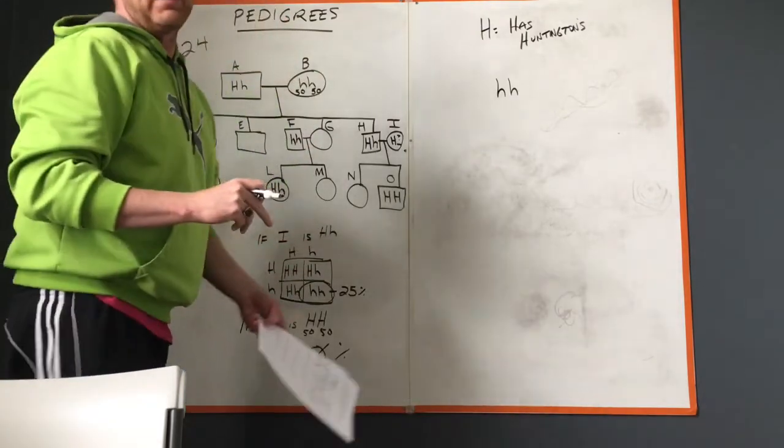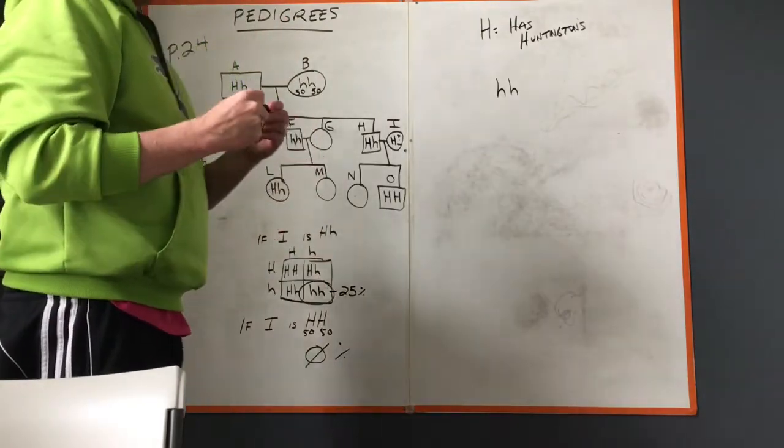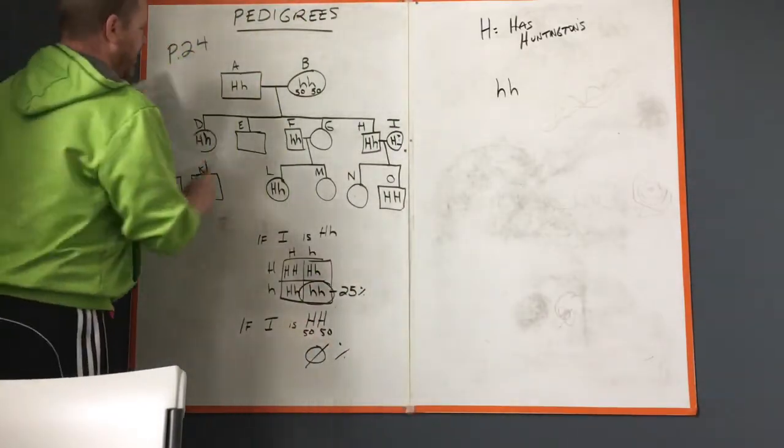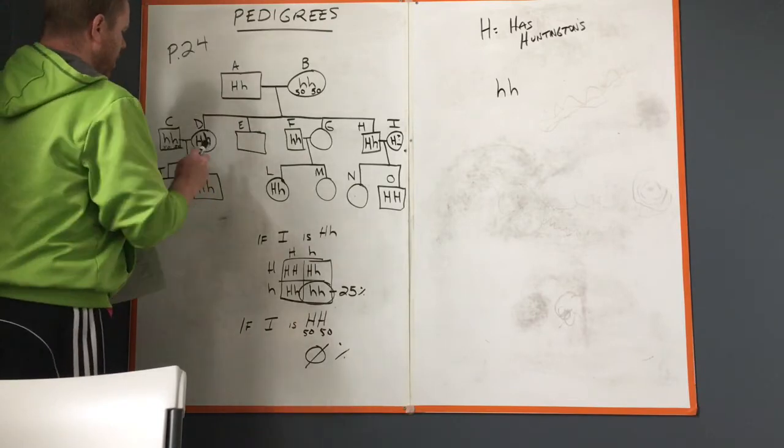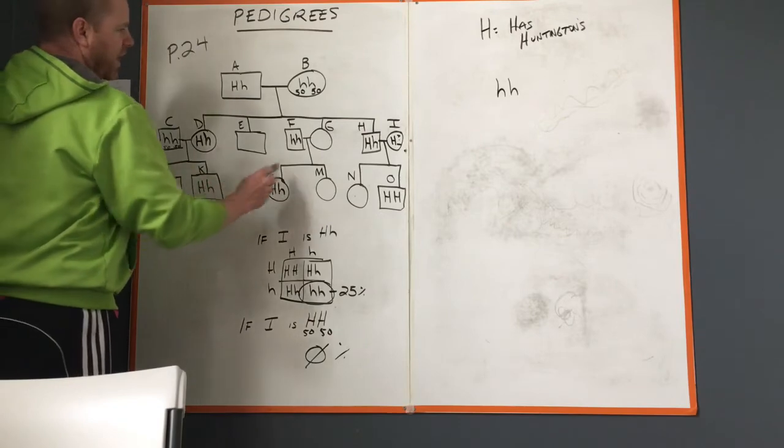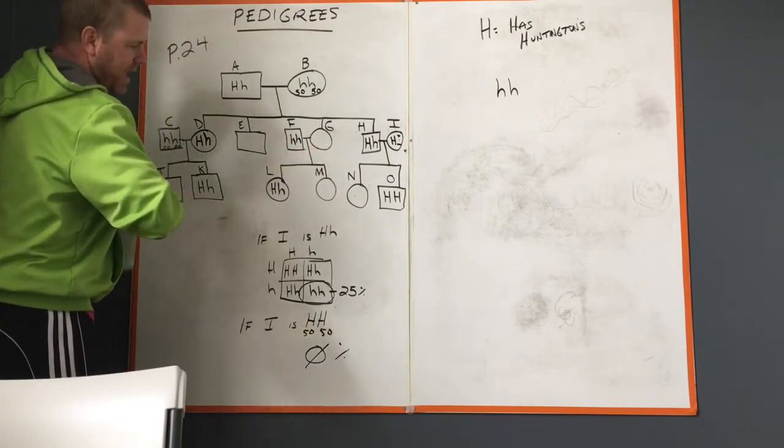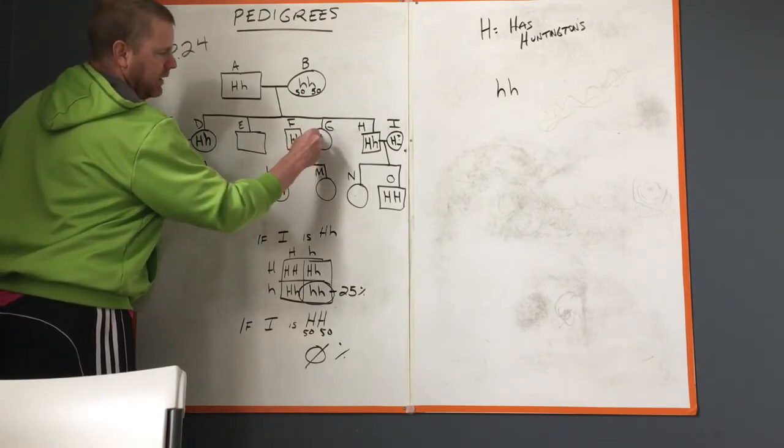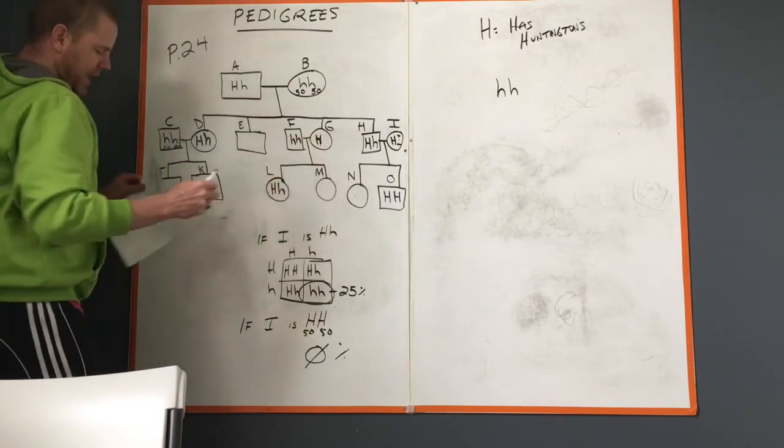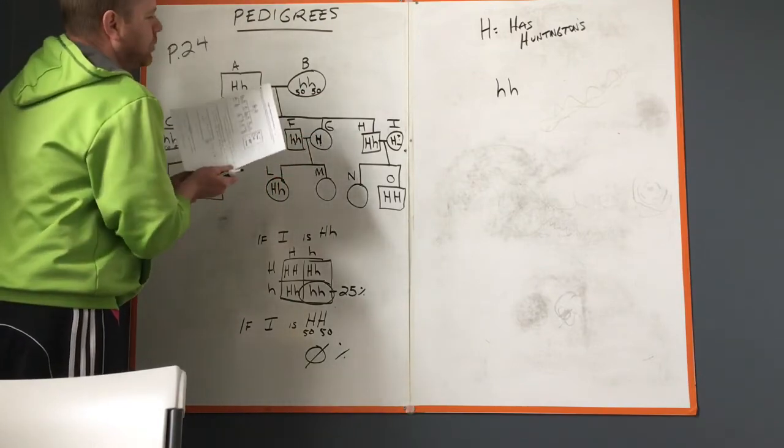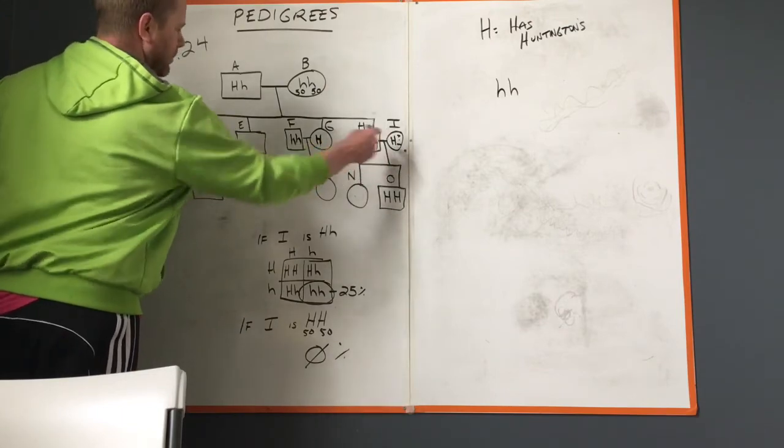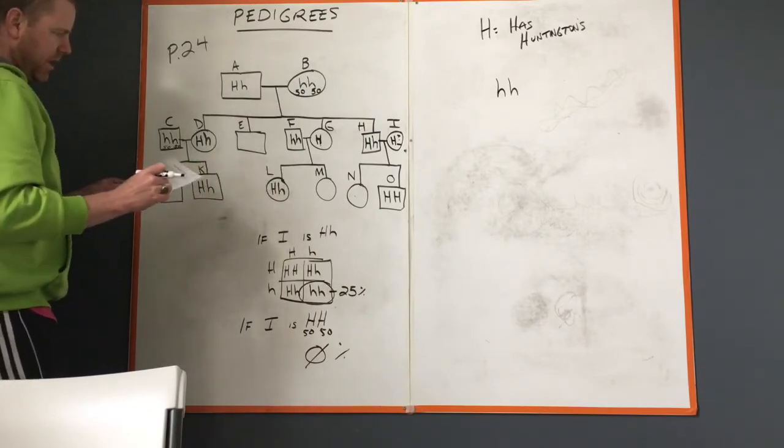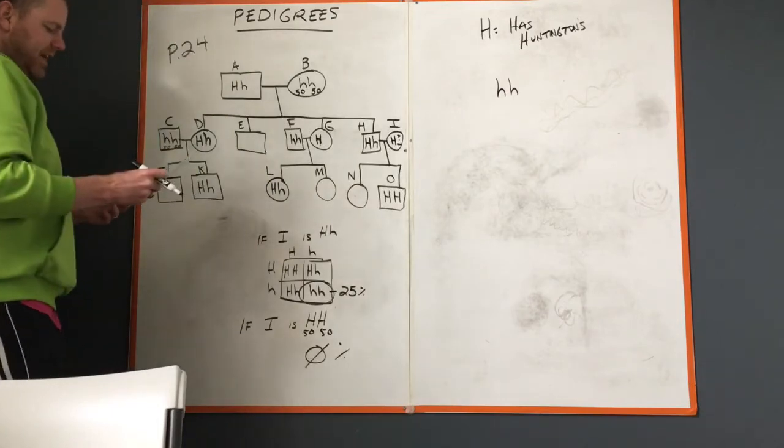What individuals can be determined to have Huntington's disease? We know that letter A has Huntington's disease, we know that letter D has Huntington's, we know that G had to have Huntington's because person L got a big H from somebody and since this person's little h little h, we know G must have gave the big H. H, we've already determined that. I has it. K, yep. We know that L has it and we know that O has it. So A, D, G, H, I, K, L, and O.